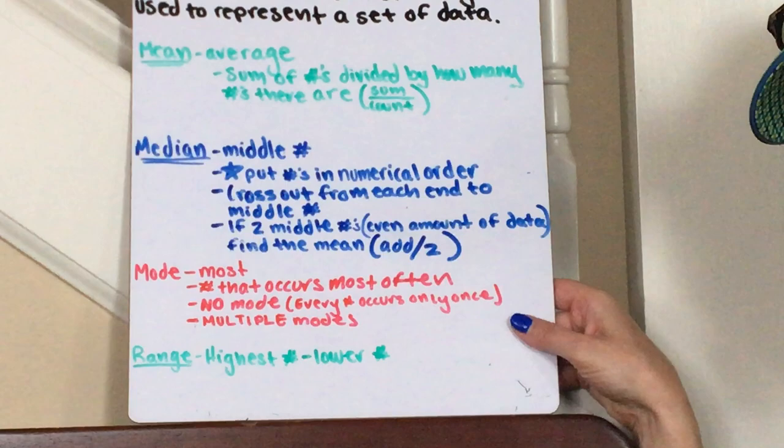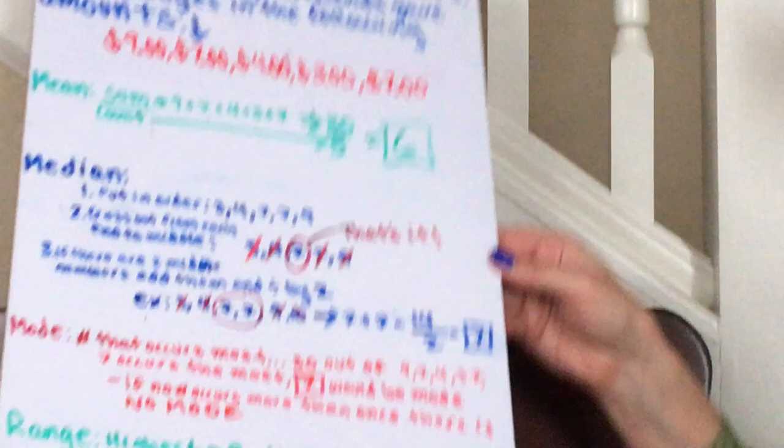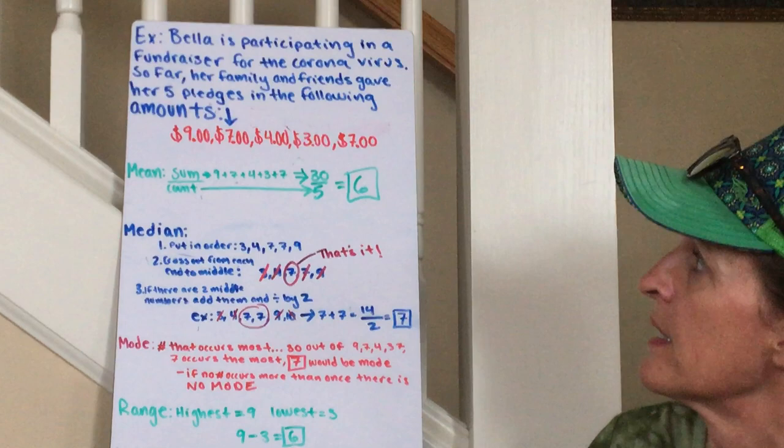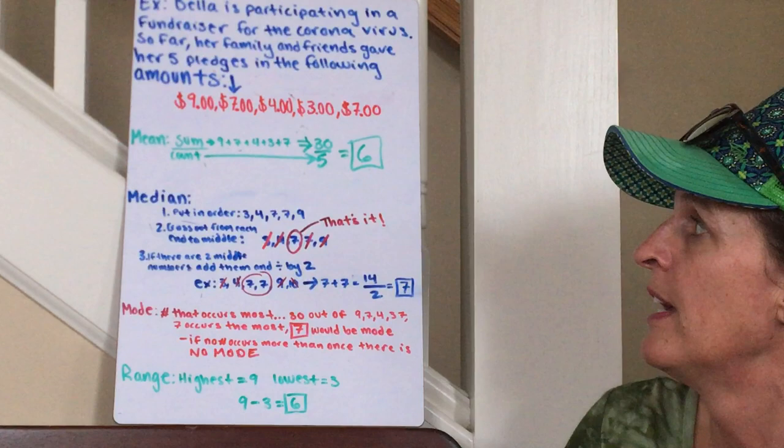All right, the example that I have here is that Bella is participating in a fundraiser for the cure for coronavirus. So far her family and friends gave her five pledges in the following amounts: nine dollars, seven dollars, four dollars, three dollars, and seven dollars.